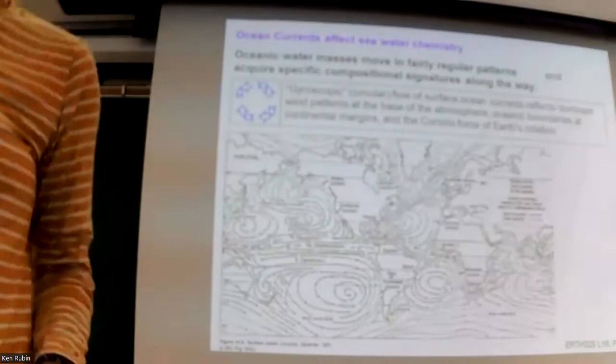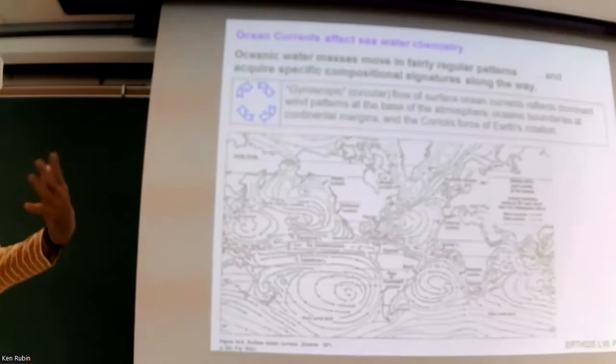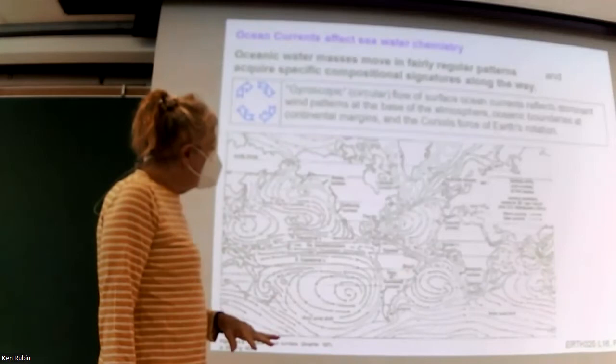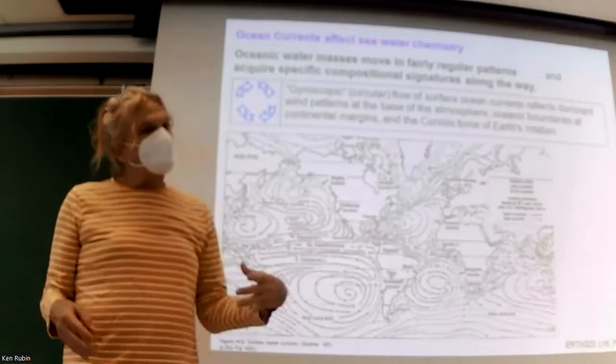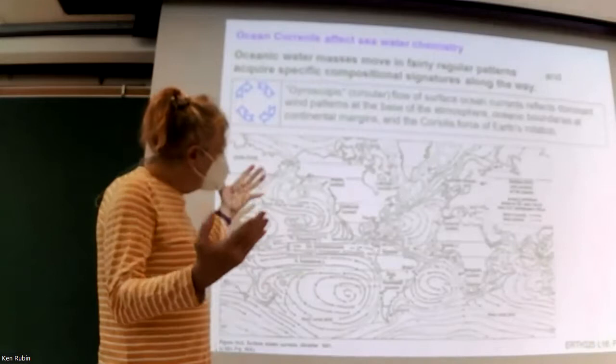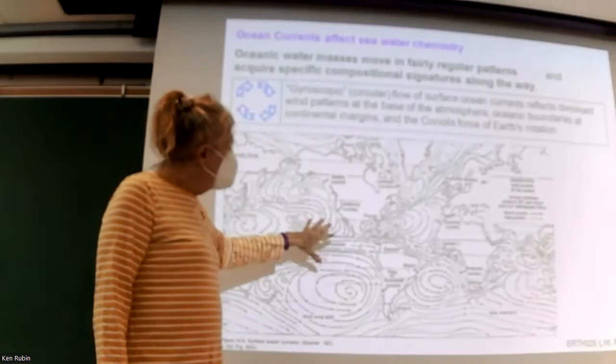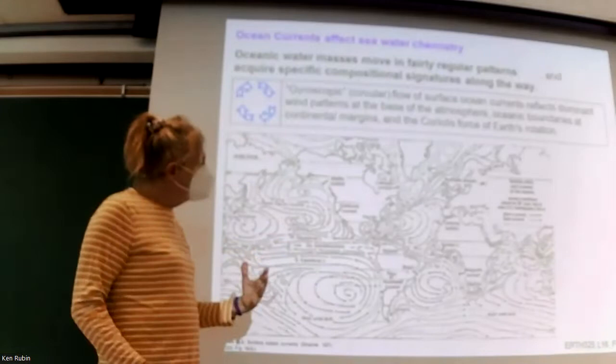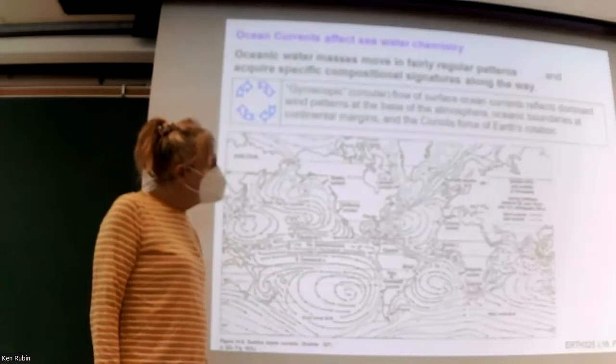We've already talked about currents. This is a slightly more detailed map — these are the surface currents, what we call gyroscopic flow. We also have deep water currents which we'll talk about. I want to highlight that what we call eastern boundary currents — like the California Current and the Peru or Humboldt Current — are places of especially high ecological significance. That's primarily driven by upwelling of very nutrient-rich water from deep water up into the photic zone that occurs there.